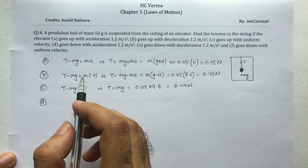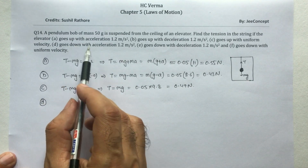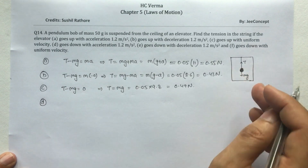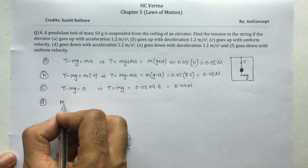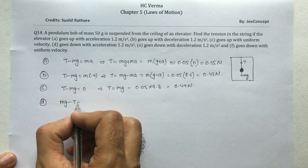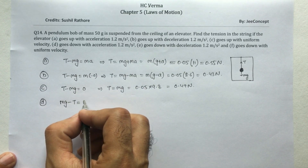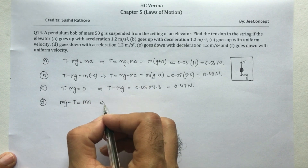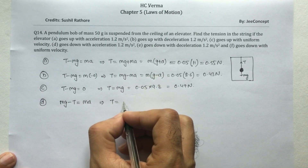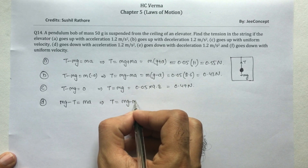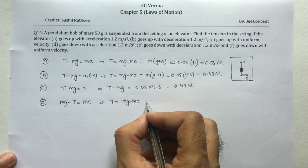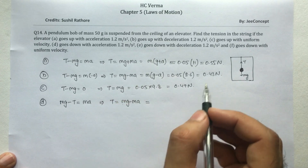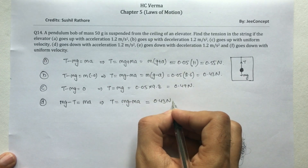Now part D: the elevator is going down with acceleration 1.2 m/s². Since it is going downward, the equation is mg minus T equals mass into acceleration. So T equals mg minus ma. We have already solved mg minus ma earlier, so the answer is 0.43 Newton.